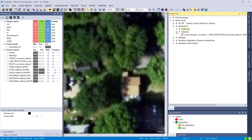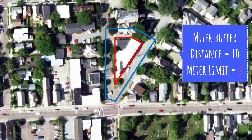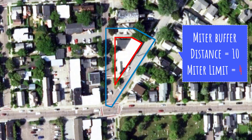Let me show you an example where the miter limit has a big influence. Here's a building with a very pointy corner at the bottom. With a miter buffer and miter limit set to 2, you can see it cuts off the buffer at that bottom corner. Increasing it to 4 changes the buffer — it only cuts off points outside 4 times the buffer distance (40 meters if buffer is 10). Increasing to 6 gives 60 meters, so it doesn't cut off and you get a very pointy corner in the buffer. Be aware of the miter limit setting because it has a big influence on your resulting buffers.